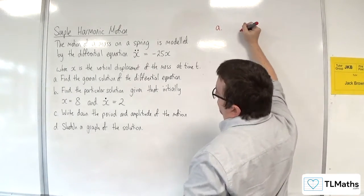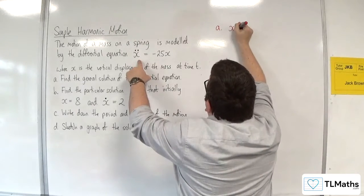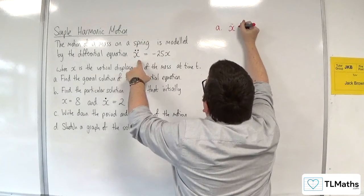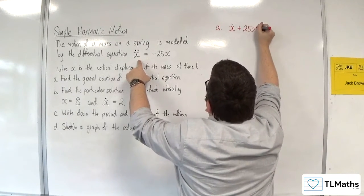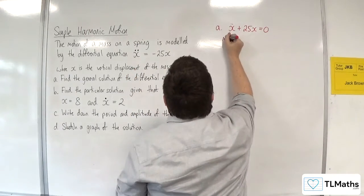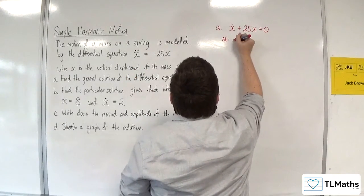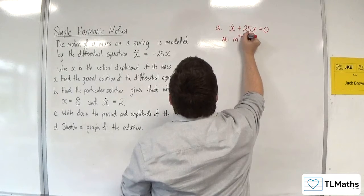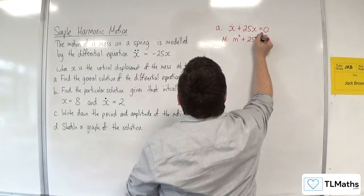So if we've got x double dot plus 25x is equal to 0, just adding 25x to both sides, then the auxiliary equation would be m² plus 25 is equal to 0.